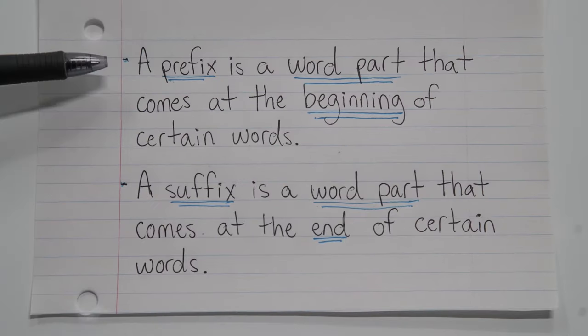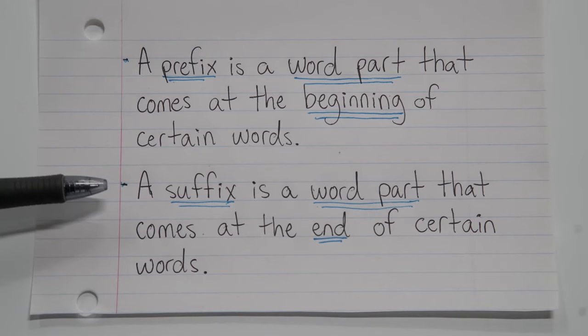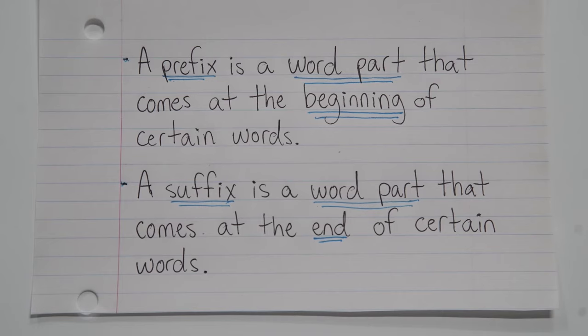So once again, a prefix is a word part that goes at the beginning of some words, not all. And a suffix is a word part that comes at the end of certain words. Not all words have prefixes and not all words have suffixes, however, certain words have both. Now let's try some practice. I want you to identify the prefix and or suffix in each word below.